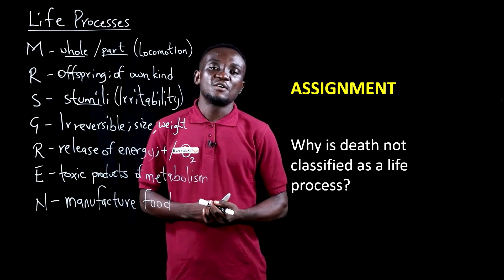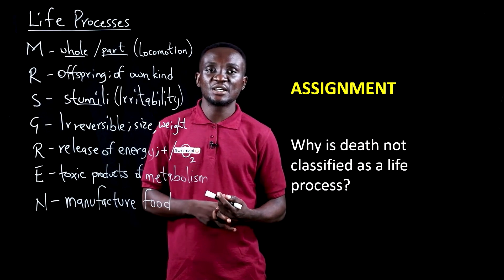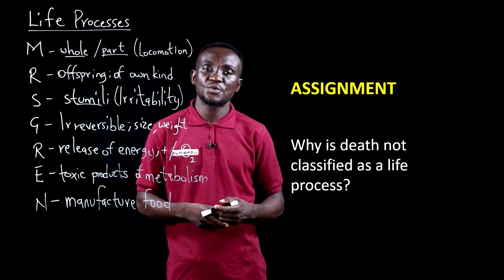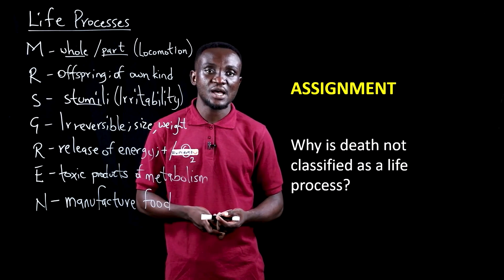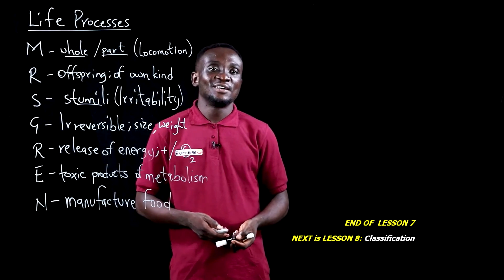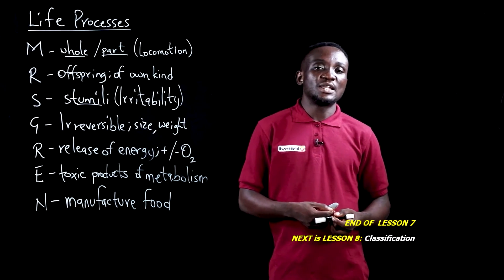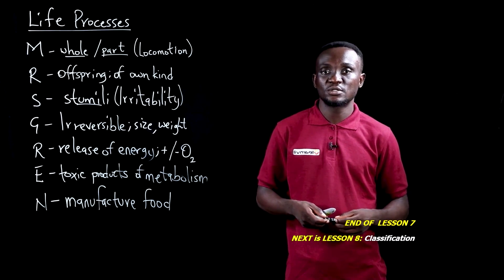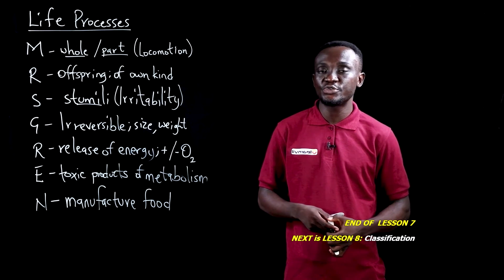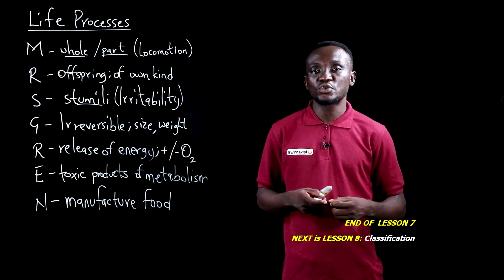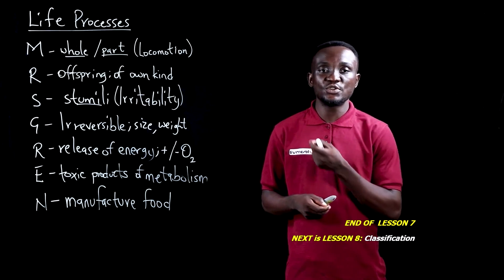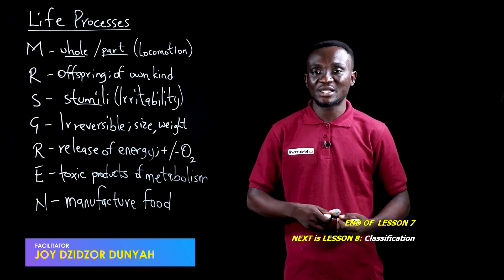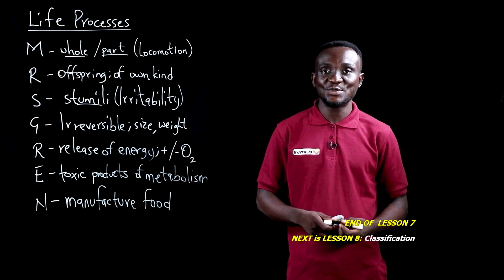Now, the assignment. From all these seven life processes, we've seen that death — which all living organisms exhibit — is conspicuously missing. So the question is: why is death not classified as a life process? In this lesson, we looked at the life processes in much detail — the definitions for each of them: movement, growth, sensitivity, respiration, reproduction, excretion, and nutrition. We've also seen the key words and key terms used to describe each of these life processes. In our next lesson, we're going to look at the classification of living organisms. See you in the next lesson.